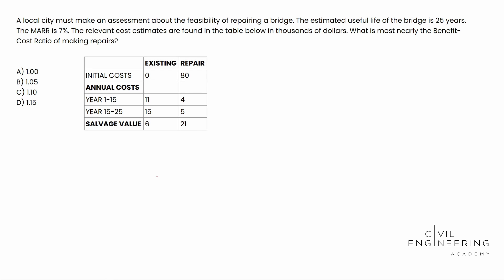So today we have alternative analysis as the FE manuals call it. This is an engineering economics problem. A local city must make an assessment about the feasibility of repairing a bridge. The estimated useful life of the bridge is 25 years. The MARR, which is the minimal acceptance rate of return, is 7%. The relevant cost estimates are found in the table below in thousands of dollars. What is most nearly the benefit cost ratio of making repairs? We see our four options available to us in decimals. And then we see a chart that gives us the initial costs of fixing the bridge. If we don't want to repair it, and then if we do repair it, it's going to be 80K straight off the bat.